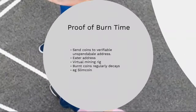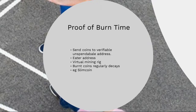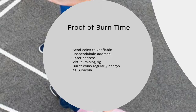Now let's focus on proof of burn. As the name itself suggests, miners have to burn something — specifically, they burn their coins. Miners burn their coins by sending them to a verified but unspendable address. The coins sent to this address cannot be retrieved back, because the address does not have the permissions to either spend or transfer these coins. Therefore, it is known as a verifiable unspendable address, also called an eater address — it eats the coins.